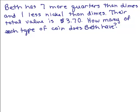All right, we're going to do another coin problem. Beth has 7 more quarters than dimes and 1 less nickel than dimes. Their total value is $3.70. How many of each type of coin does Beth have?